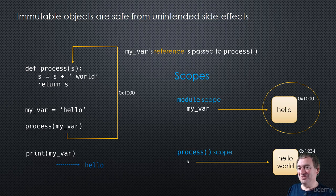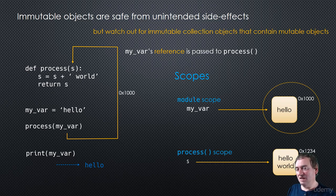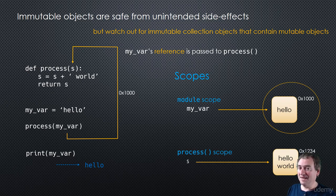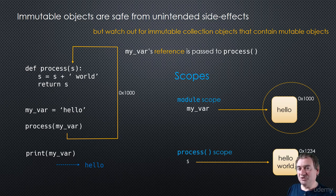We have to be a little careful with that, especially with container-style objects like a tuple. Even though tuples are immutable, their elements may be mutable. So we'll get to that in a minute, but let's first look at what happens when we have a mutable variable and why we don't have safety in that scenario.